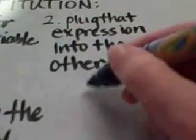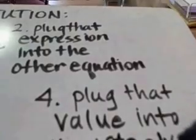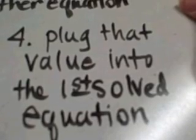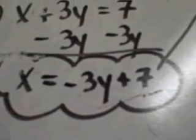The last step. Step four is to plug that value into the first solved equation. Now I know it seems like I'm going in circles here, but I put a bubble around that first solved equation when I solved it so that it would be easy to find right now.